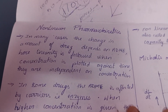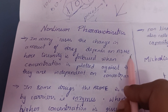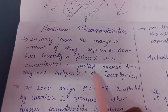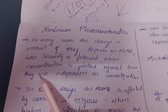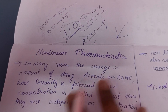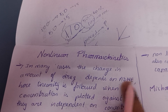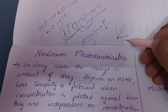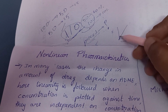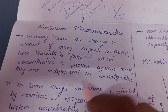In many cases, the change in amount of drug depends on ADME. Linearity is followed when concentration is plotted against time and the process is independent of concentration. Linearity is dose-independent.